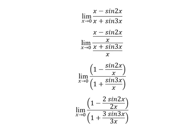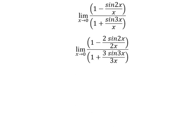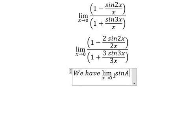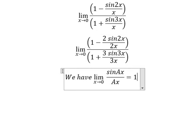Now we have the formula in here. So when x approach to number 0, sine of 4x over 4x equals to number 1.